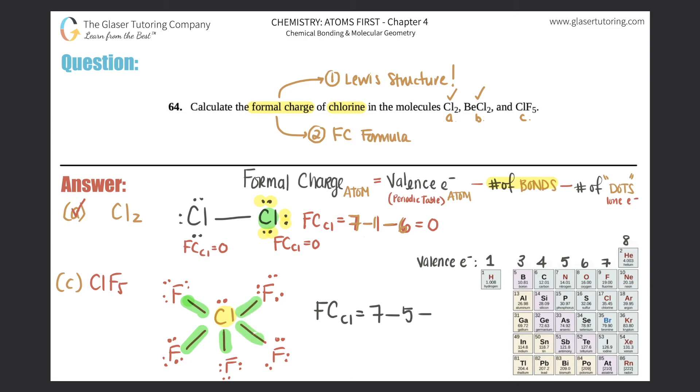Cool. Minus number of dots, which is the lone pairs. How many dots are in this chlorine? One, two. So minus two. Seven minus five minus two is zero. Zero.